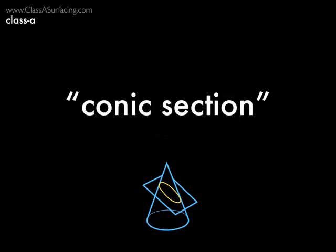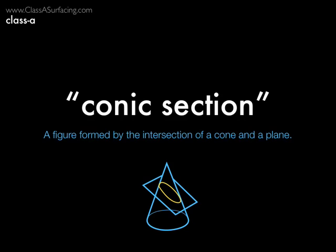So, what is a conic? Simply stated, a conic is the intersection of a cone and a plane. This means that it's a simple, predictable curve. It's always planar, it's always convex, and always second-order.